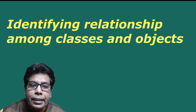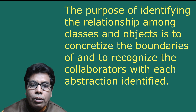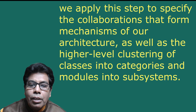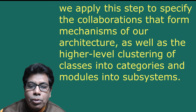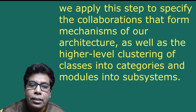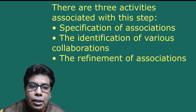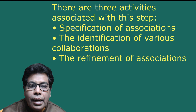The purpose of identifying relationships among classes and objects is to concretize the boundaries of and recognize the collaborators with each abstraction. As part of analysis, we specify associations among classes and objects, including inheritance and aggregation relationships. As part of design, we specify collaborations that form mechanisms of architecture, as well as higher-level clustering of classes into categories and modules into subsystems. As implementation proceeds, we refine relationships such as associations into implementation-oriented relationships including instantiation and use. Class diagrams, object diagrams, and module diagrams are the primary products. The three activities are specification of associations, identification of collaborations, and refinement of associations.